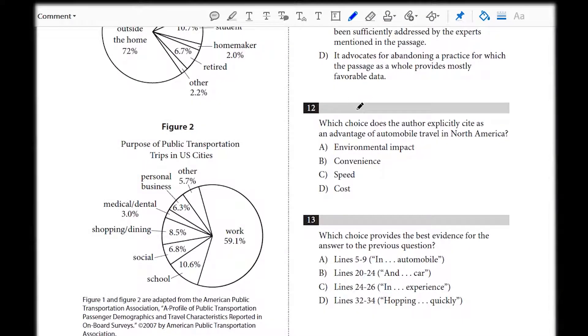Question 12 says, which choice does the author explicitly cite as an advantage of automobile travel in North America?